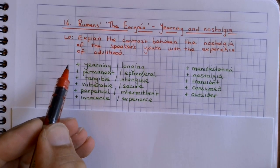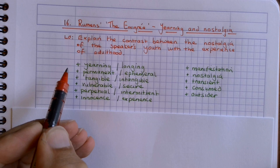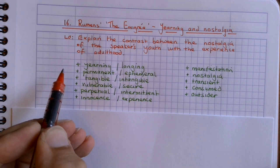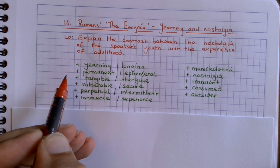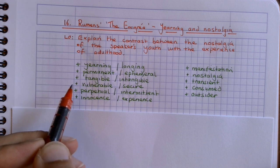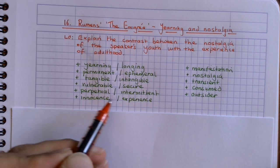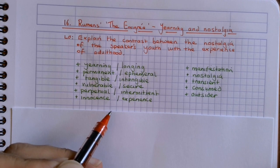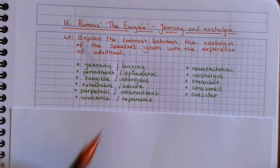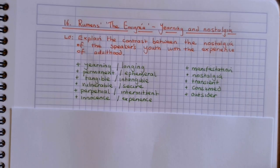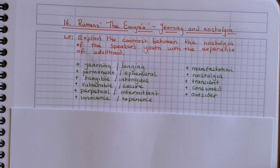There are a lot of words that we've done in our versatile vocabulary that are going to be really useful when tackling this poem. We've got yearning and longing, permanent, ephemeral, tangible, intangible, vulnerable, secure, perpetual, intermittent, innocence, experience, manifestation, nostalgia, transient, consumed, and outsider. So there's an awful lot of vocabulary that we've studied already that is going to be brilliant for helping us tackle this poem.